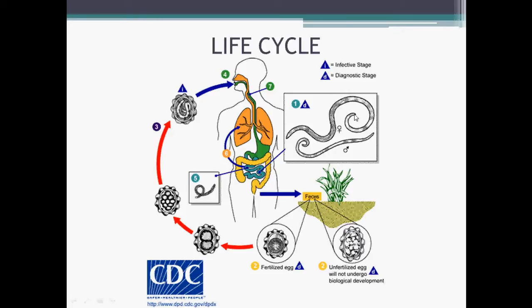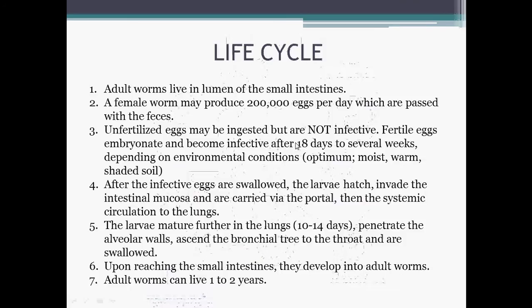This is the life cycle of Ascaris lumbricoides. The female worm is larger and longer than the male worm, but the male worm can be distinguished from the female by its curved tail end. Adult worms live in the lumen of the small intestines.